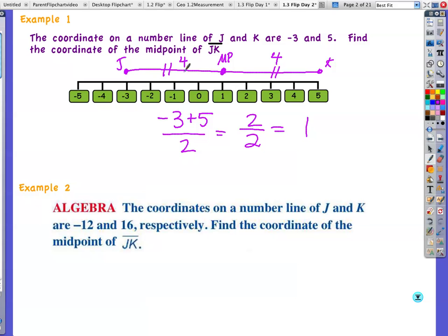Alright, example 2. The coordinates of the number line J and K are -12 and 16 respectively. Find the coordinate of the midpoint of J and K. Okay, well you can draw out a number line if you want. But basically using this method right here, we're going to find the average of these two points. So we're going to add them together and divide by 2. That gives me 4 over 2. So my midpoint on the number line would be at 2.